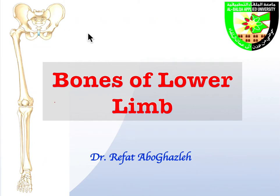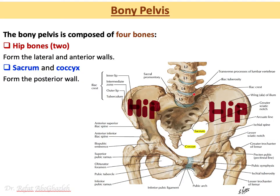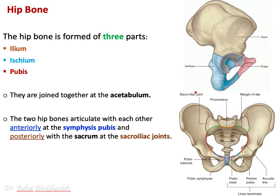Hello everyone, today I will talk about the bones of the lower limb. I will start first with the anatomy of the bony pelvis. When you say bony pelvis, that means you are describing four bones: the hip bones, one on the right and one on the left, representing the lateral and anterior walls on each side, the sacrum which is like an inverted triangle, and another small triangle which is the coccyx.